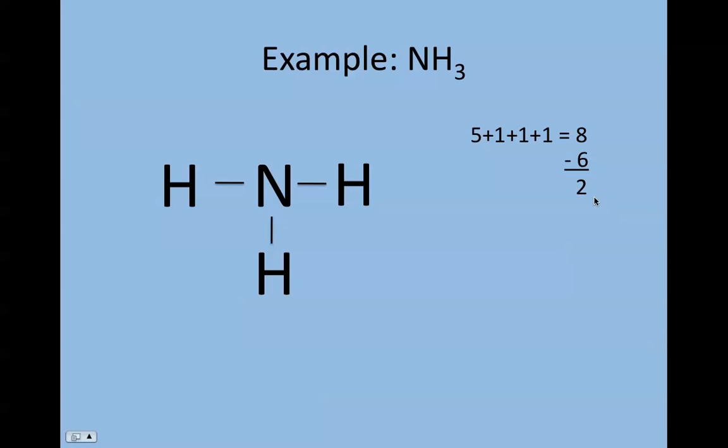Because hydrogen is satisfied with the bond and can never have lone electrons, those remaining two go on the central atom, nitrogen. When I subtract those out, I get zero. Each hydrogen is satisfied with the two electrons in the bond, and nitrogen has eight electrons around it.